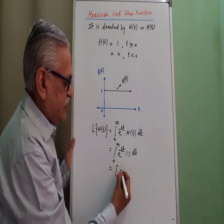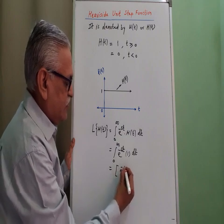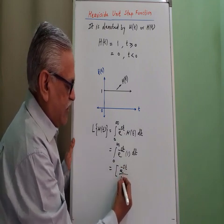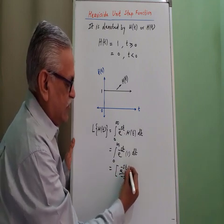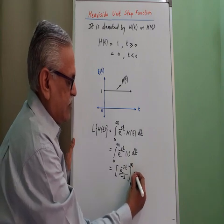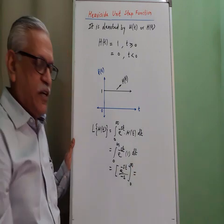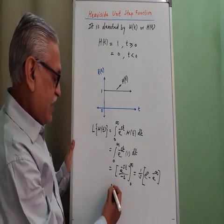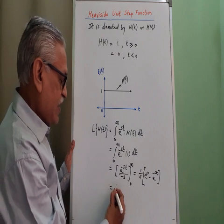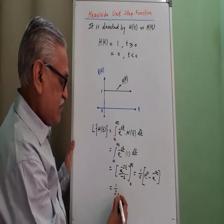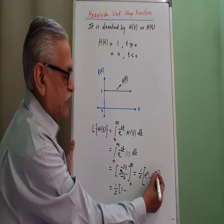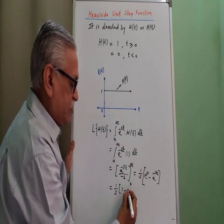Its integration is e raised to minus s t upon minus s, with the limit from 0 to infinity. Therefore it equals 1 by s, since e raised to 0 is 1, and e raised to minus infinity is 0.